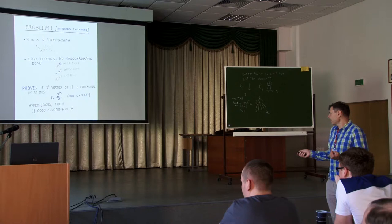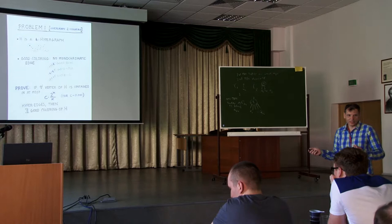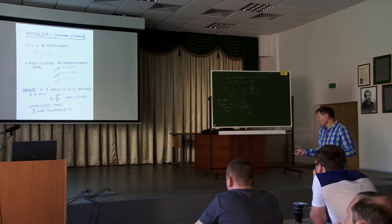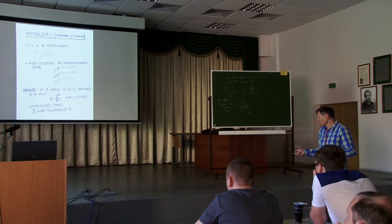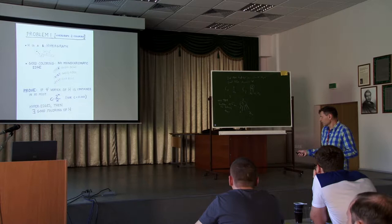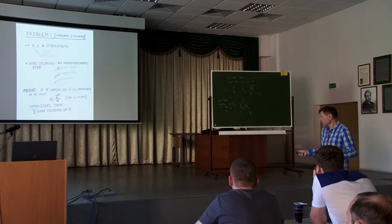It is well known that for graphs, if a graph has maximum degree delta, then we can always color it with delta plus 1 colors. The degree of a hypergraph is how many edges you see on a certain node, and the maximum degree maximizes this quantity. We want to prove a theorem: if the maximum degree is not very large, then you can color the graph in two colors. The lemma states that if the maximum degree is not larger than some constant times 2^K divided by K, then you can color the hypergraph with two colors.